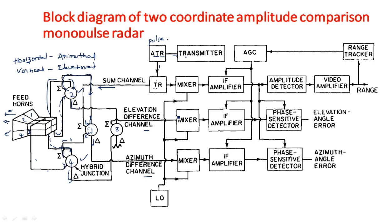The received signal passes through a mixer, which converts the RF signal into an IF signal by mixing with the local oscillator signal. The output goes to an IF amplifier and then to a phase detector. The same operation used in the single coordinate monopulse radar is applied here, but using two different channels to identify both azimuthal and elevation coordinates. The output gives elevation angle error and azimuthal angle error.